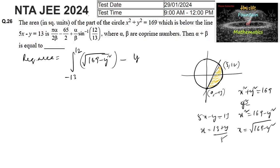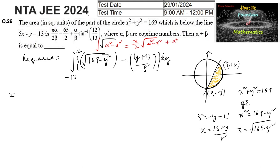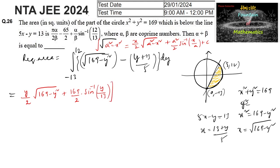The lower curve from the line gives x = (y + 13)/5. So the integral is ∫[√(169 - y²) - (y + 13)/5] dy from -13 to 12. Using the formula ∫√(a² - x²) dx = (x/2)√(a² - x²) + (a²/2) sin⁻¹(x/a) + C, we apply it with a = 13, giving (y/2)√(169 - y²) + (169/2) sin⁻¹(y/13).